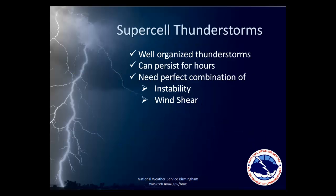The most common type of tornado-producing thunderstorm is the supercell. A supercell is a special, well-organized type of thunderstorm that can persist for several hours. Supercells form when there is a perfect combination of instability and wind shear. Instability is a measure of buoyancy in the atmosphere. An unstable air mass will cause a warm bubble of air near the ground to rise up, much like how the hot air in a hot air balloon lifts the balloon up into the air.